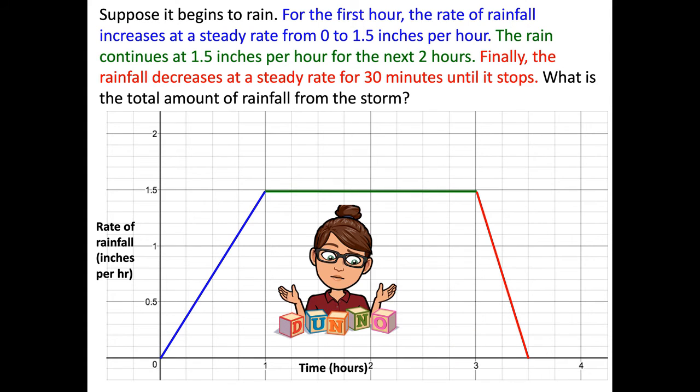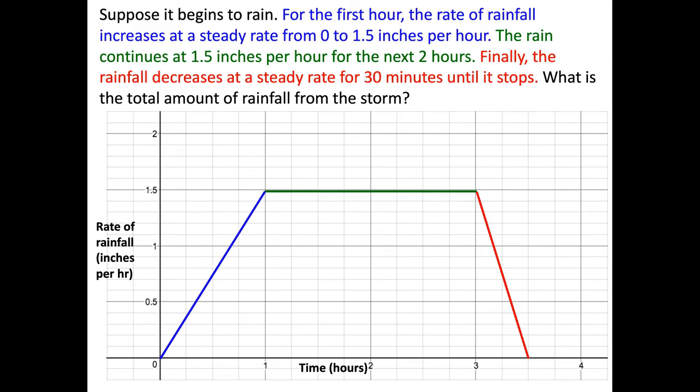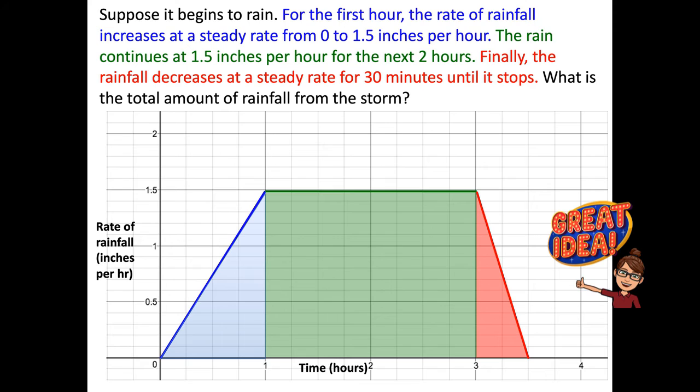So what is the total amount of rainfall from the storm? Now, you're probably thinking, well, we can just multiply each part, the blue, the green, and the red, and then get our answer. Well, let's apply geometry here. If you look at the geometry, we have a trapezoid. So we could find the area of this entire trapezoid, and the area under all of those rate functions would give us the total accumulation of rainfall from the storm. An easier way would be to look at this as three objects. Objects that are figures that we're more comfortable with, say, a triangle and a rectangle.